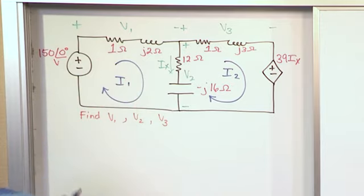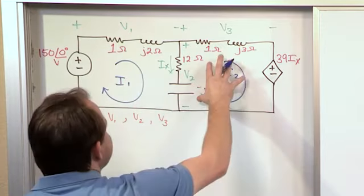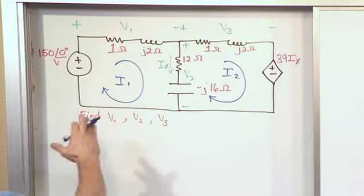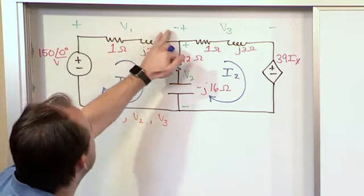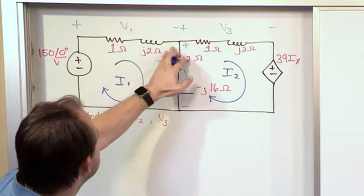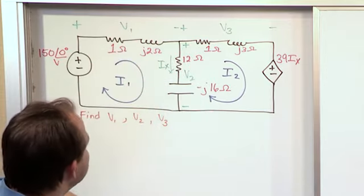So we want to write a mesh current equation for mesh 1 and a mesh current equation for mesh 2. We will solve for I1 and I2. Once we have I1 and I2, we'll be able to find V1, for instance, by the current I times the impedance going through here. That'll be V1.